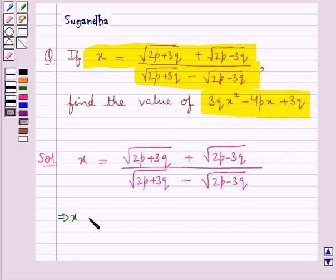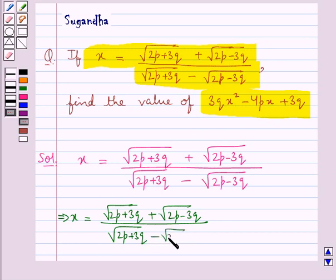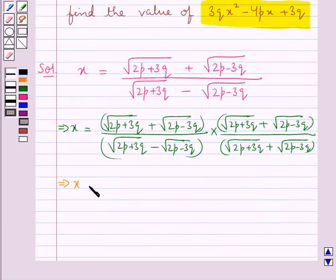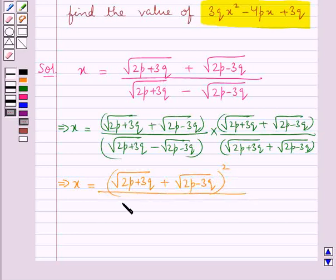For rationalization, we multiply its numerator and its denominator by (√(2p + 3q) + √(2p - 3q)). That is, we get x equal to (√(2p + 3q) + √(2p - 3q))² in the numerator, divided by the denominator (2p + 3q) - (2p - 3q).